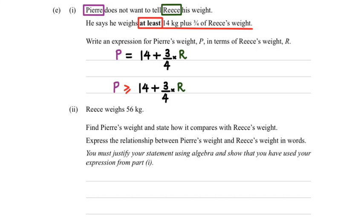Okay, looking at the next part, it says Rhys weighs 56 kgs, find Pierre's weight and state how it compares with Rhys' weight. Then it says express the relationship between Pierre's weight and Rhys' weight in words.